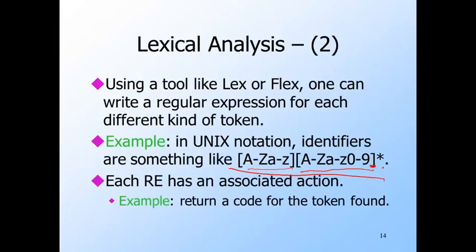In lex, you write an action, which is arbitrary code to be executed when the regular expression for a token is matched. In the simplest cases, all this code does is return an integer code representing the token found. But the action might be much more complicated. For example, if an identifier is found, the action might involve installing that identifier in a symbol table, where all identifiers used by the program are stored.